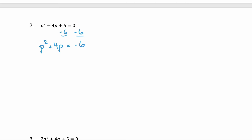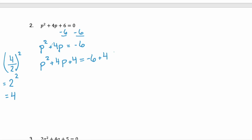Now we have to complete the square. Take the value of b, which is 4, divide it by 2, and then square it. 4 divided by 2 is 2, and then squared, that's 4. So we're adding 4 to both sides to complete the square: p squared plus 4p plus 4 equals negative 6 plus 4. The left-hand side is a perfect square trinomial — it's p plus 2 squared, since the second term is whatever we had before squaring, which is plus 2. The right-hand side simplifies: negative 6 plus 4 is negative 2.